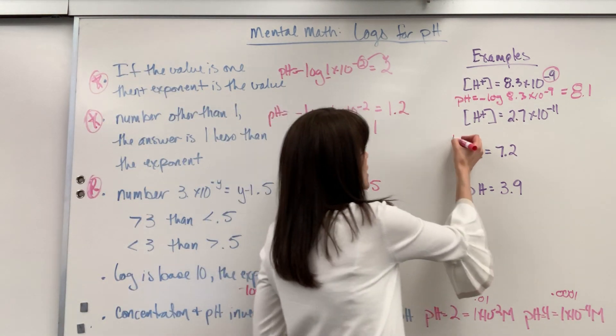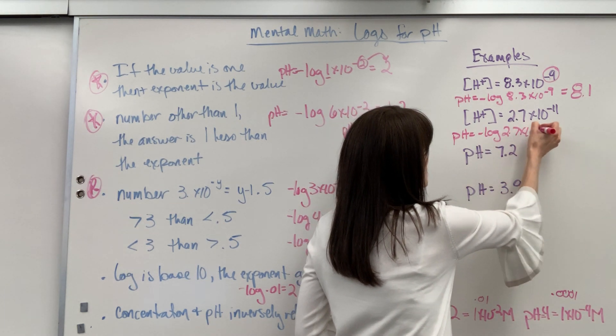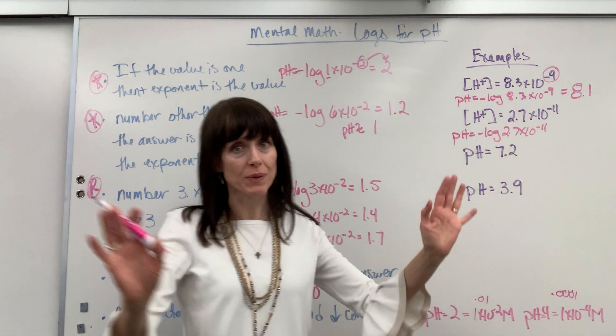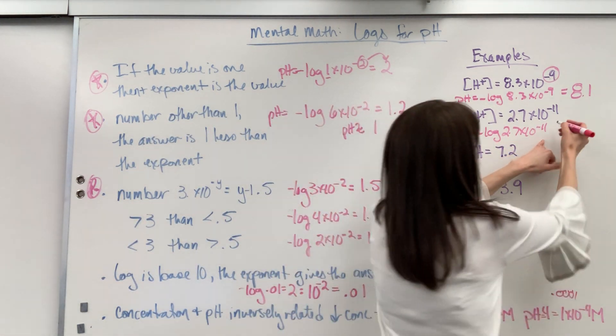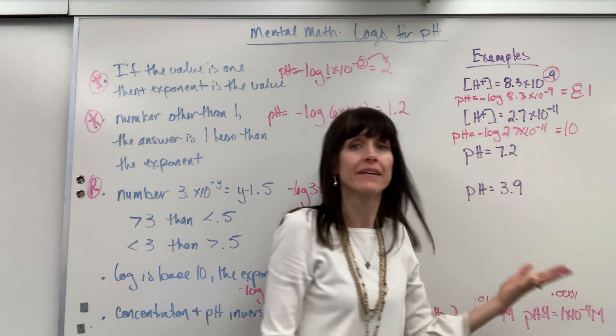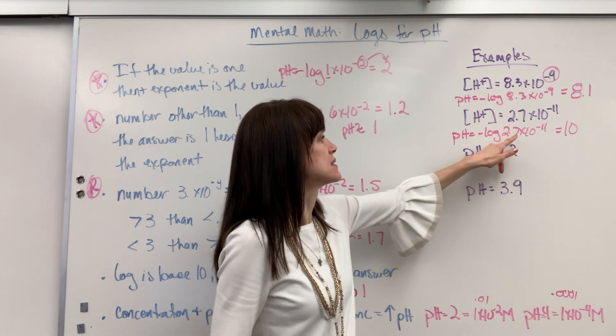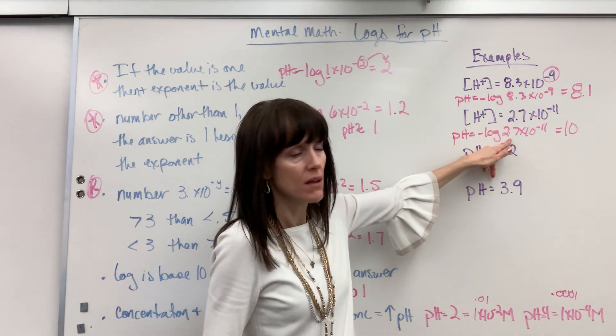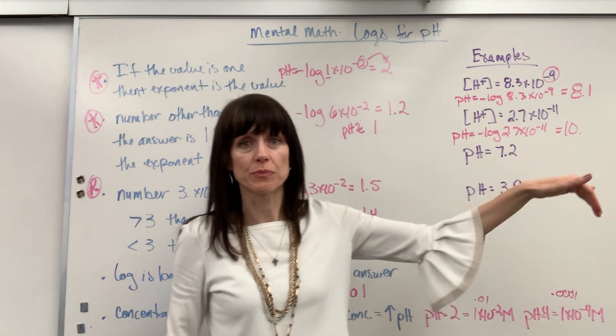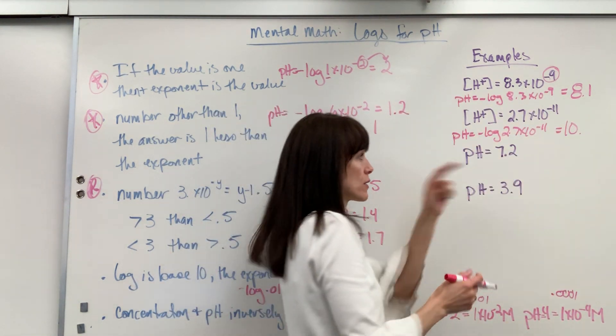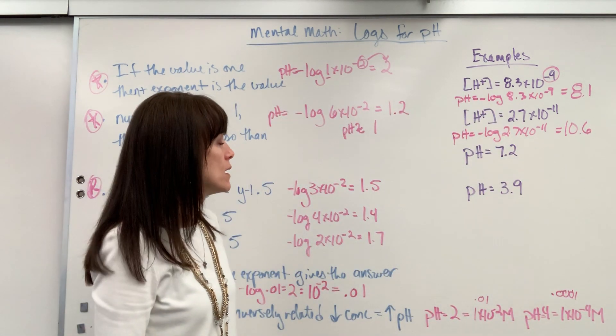Now let's do this one. pH equals the negative log of 2.7 times 10 to the minus 11. First place I go, exponent. This isn't a 1. So I do 1 less than 11. So the pH is going to be 10. Again, at least gets me in the ballpark. And then I look at this number. I go, oh, that is less than 3. So if it's less than 3, that means that this decimal place will be above 0.5. Remember inversely related goes opposite. So I'd say it's pretty close to 3. I'd say maybe like a 0.6.